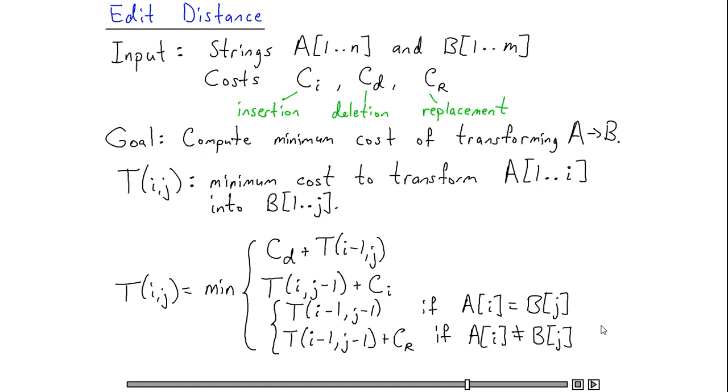In other words, the only ways to transform i characters of A into j characters of B must come through one of these four alternatives.